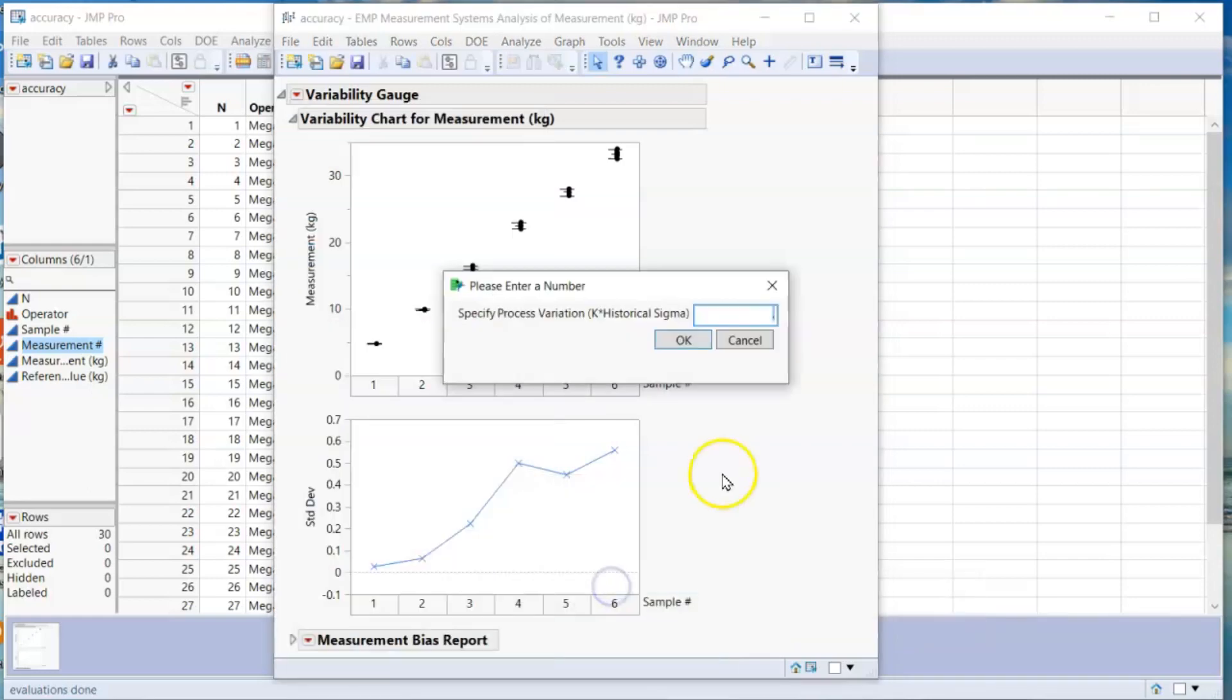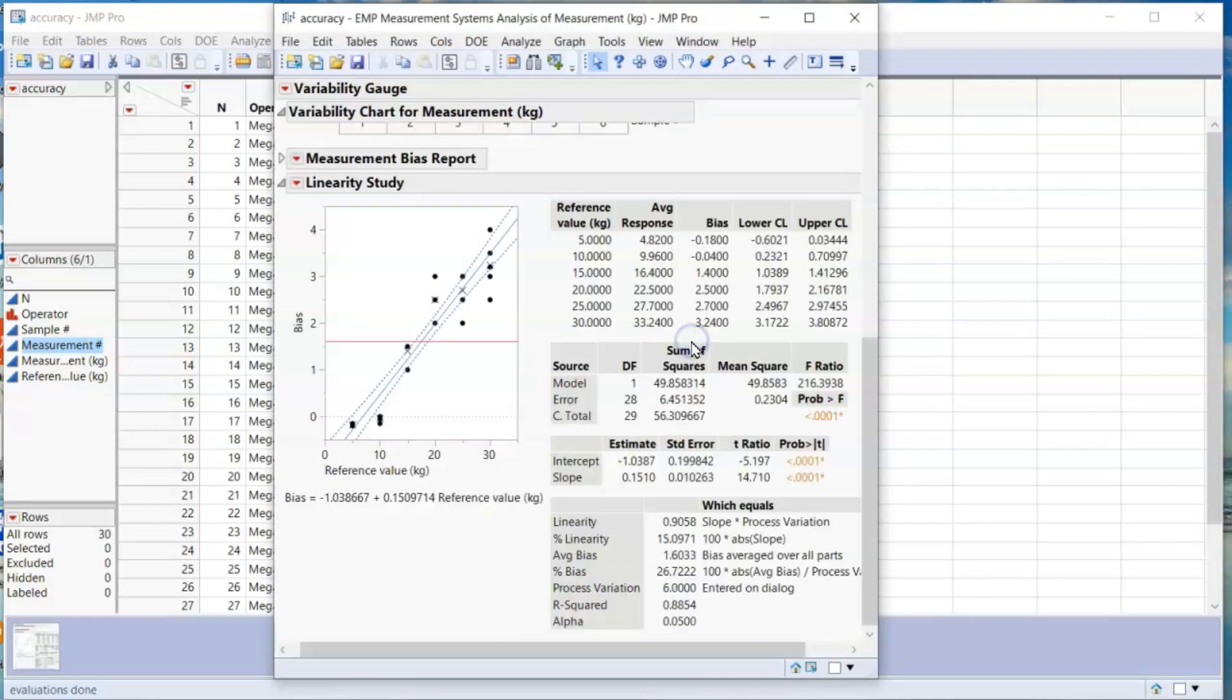A small window will pop up for you to enter the historical K sigma. Enter 6. And this is the linearity report.